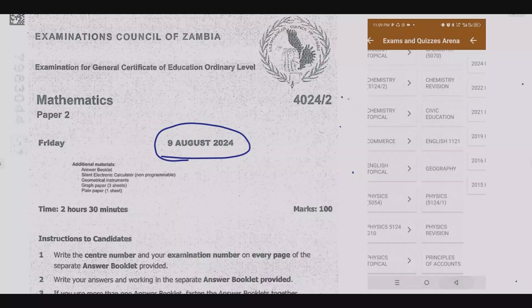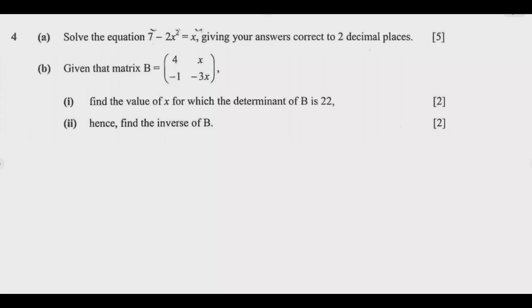Let us look at question 4. Question 4a says solve the equation 7 minus 2x squared equals x, giving your answers correct to two decimal places. So let us start with part a. This equation can be written as: we take this one to the other side so it becomes 2x squared, the minus becomes a positive, then plus x, then the 7 also crosses so it becomes negative, equals 0.